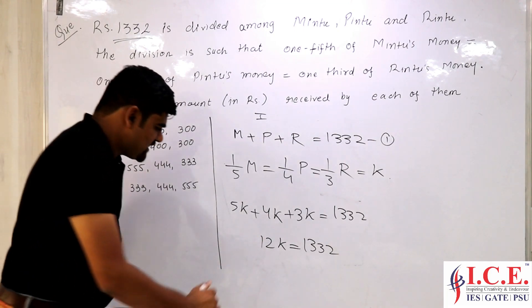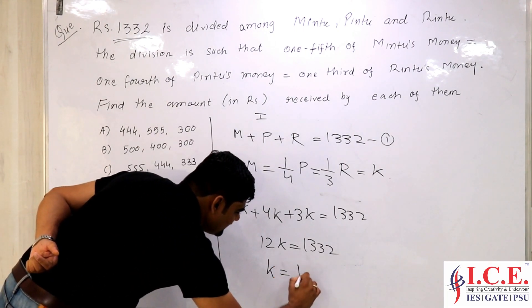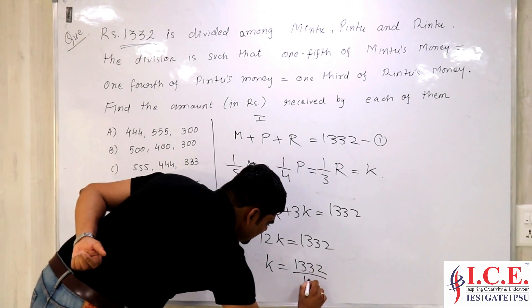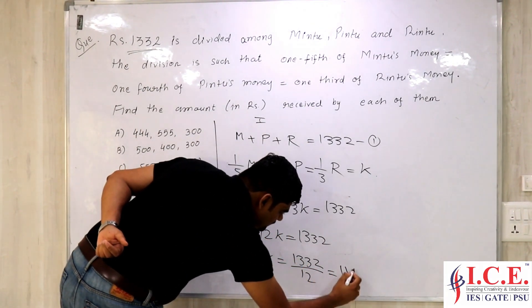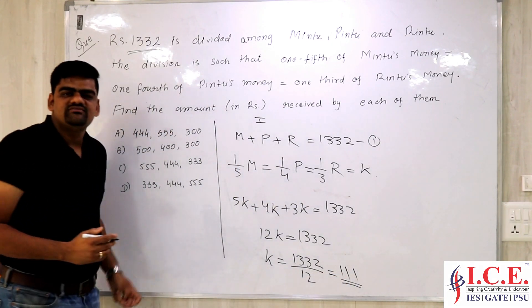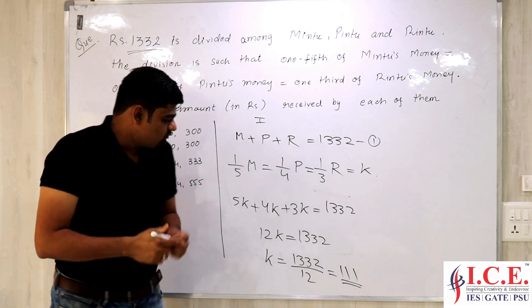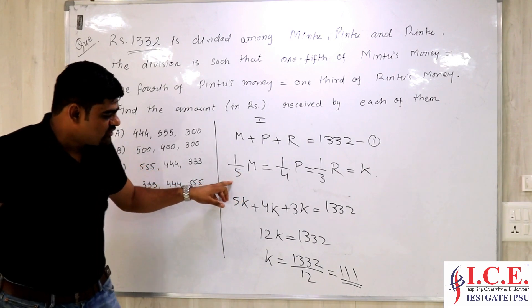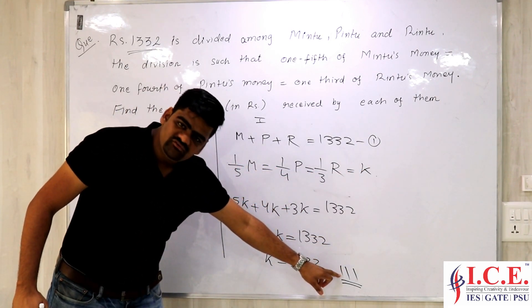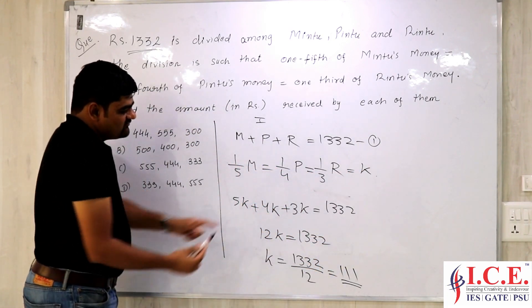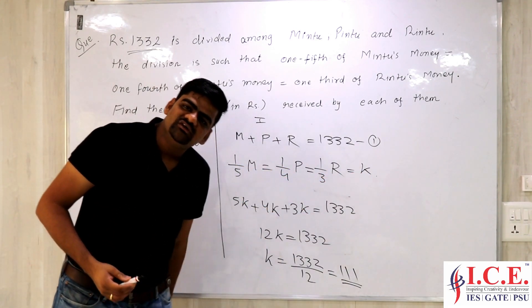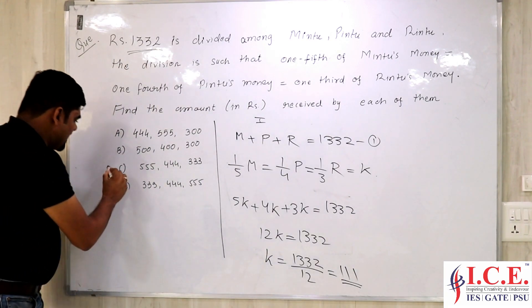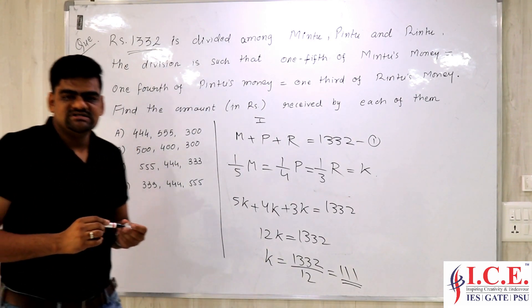If you solve the value of K, the value of K is 1332 divided by 12. If I simplify this, this will be 111. So the value of K comes out to be 111. Now easily I can find value of M was 5K, so it is 5 times of this, which is 555. Value of P was 4 times of this, which is 444. And value of R is 3 times of this, which is 333. So the answer is going to be option number C.